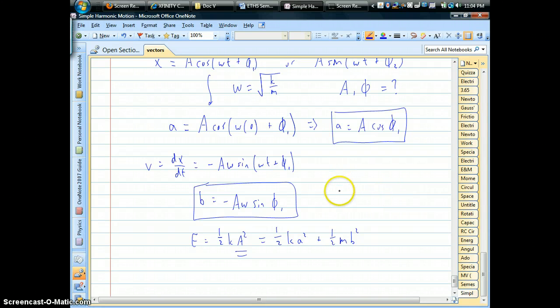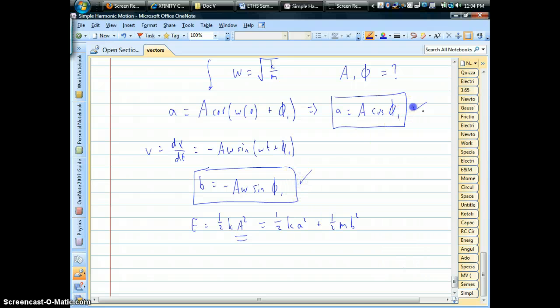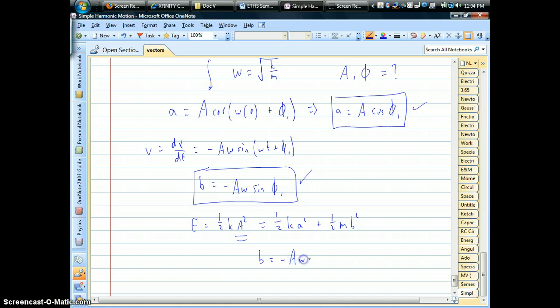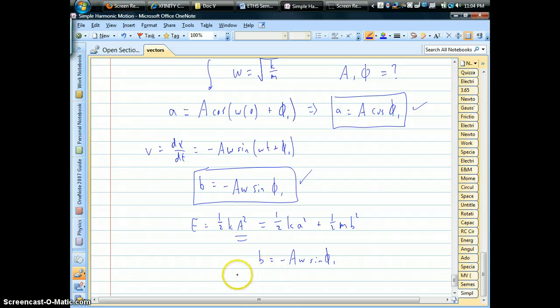Or, what you could do is, these two boxed equations here—you could divide those equations by each other. For example, maybe you could take your speed equation and divide it by your position equation.